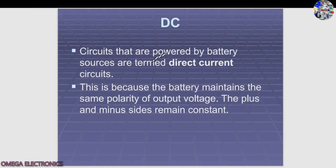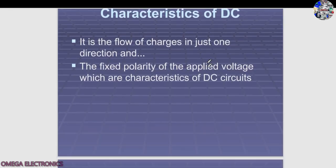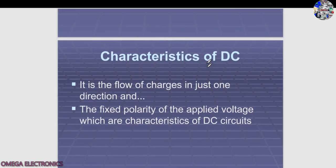Now let's talk about the kinds of current: AC and DC. Direct current (DC) circuits are powered by battery sources. The polarities remain the same and cannot be changed, because the battery maintains the same polarity of output voltage — the plus and minus sides remain constant, unlike alternating current.